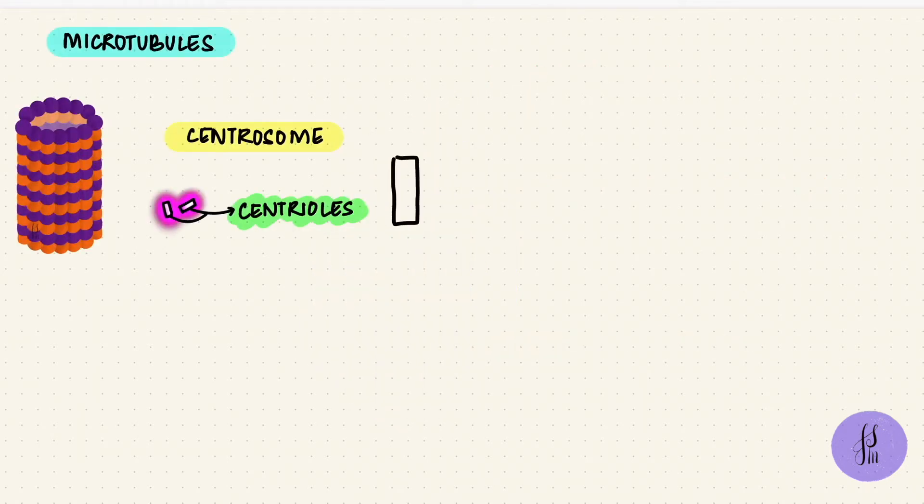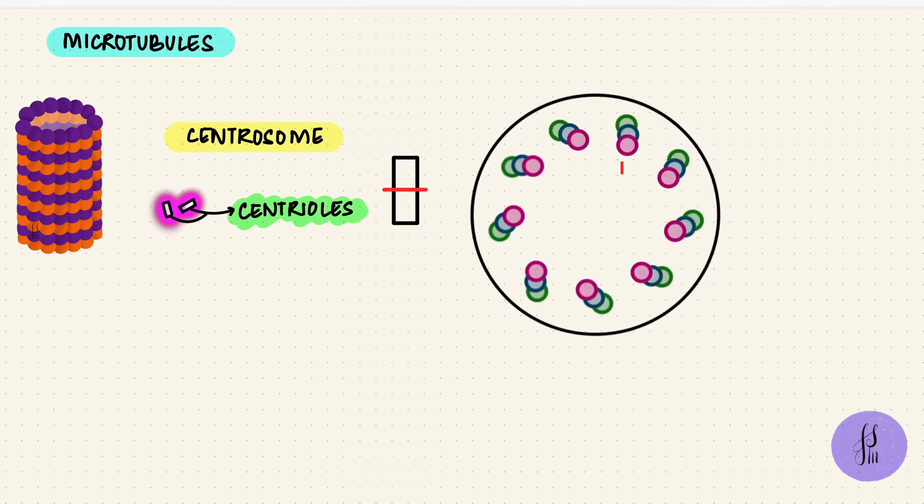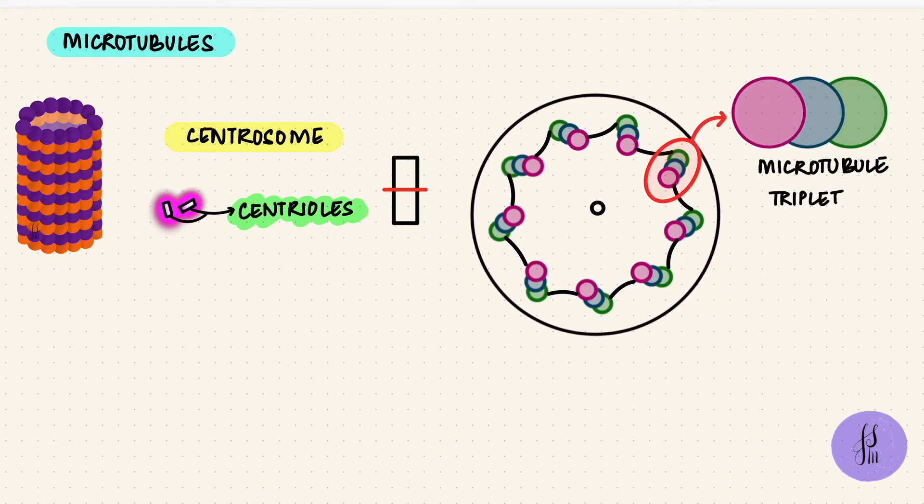If we take a cross section of a centriole, meaning we cut it in half and look at it from above, it has nine sets of microtubules. Now this is a simplified version. The whole thing would actually look like a cartwheel with all those radial spokes, but we just need the microtubules right now. Each set is a triplet—so that's three microtubules: A, B, and C. The A tubule is complete with 13 units, but B and C are incomplete with around 11 each. So there's nine triplets in a centriole.